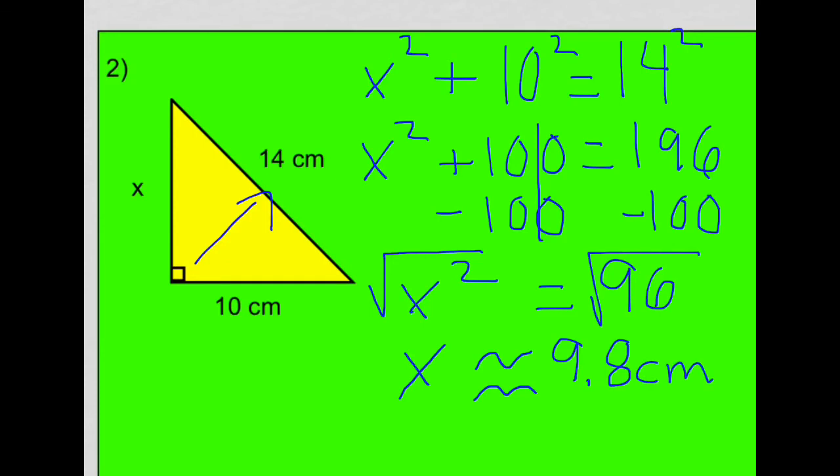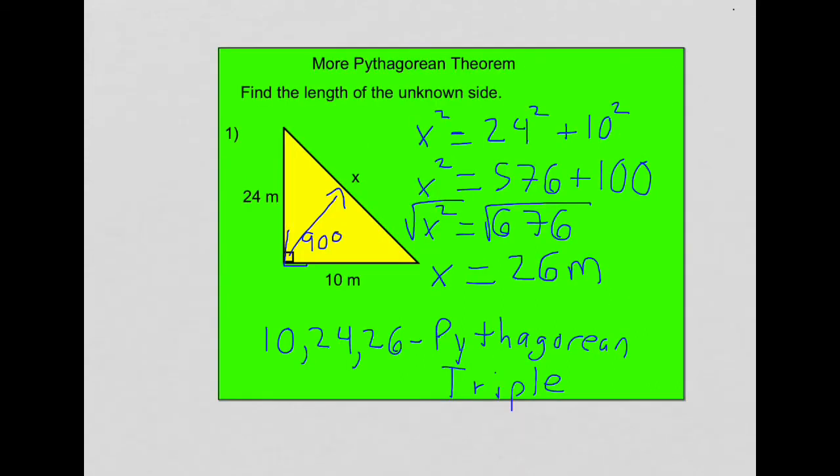So two different kinds of questions. In this question, we were missing the leg of the right triangle. In the previous question, we were missing the hypotenuse of the right triangle. So two different kinds of questions. I'm going to give you more practice today and make sure you can try to distinguish between the two kinds of questions.